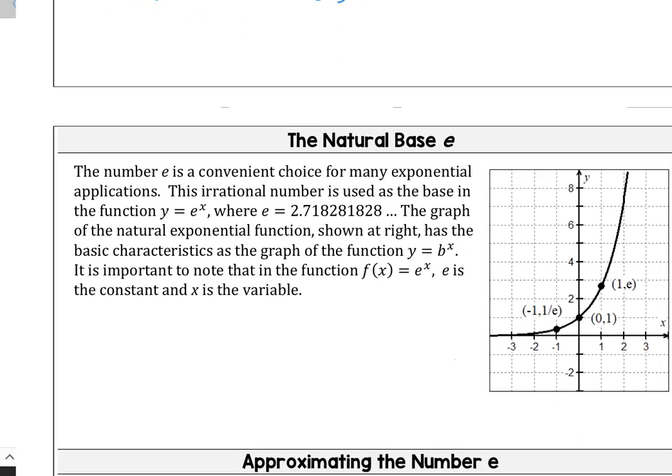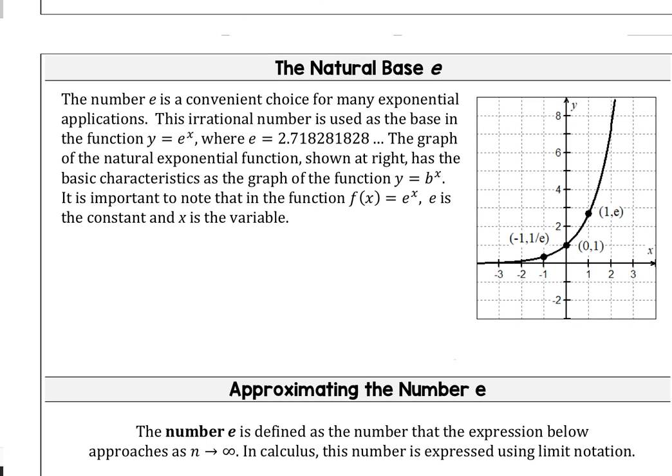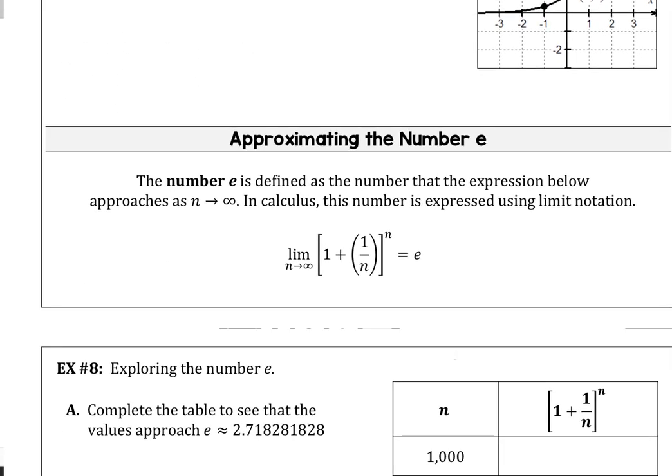It's a convenient choice for exponential applications like growth and decay from time to time. The value for e using our calculator is 2.71828 repeating. It's defined as a number for the expression that's shown below.